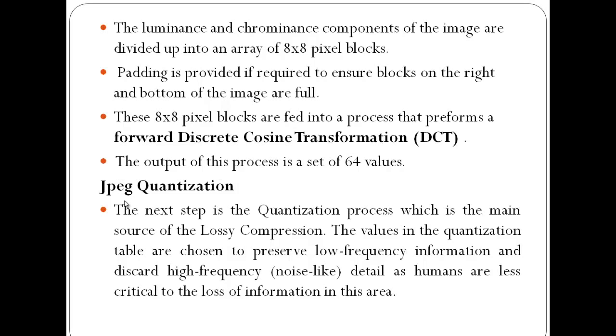After this, JPEG quantization is done. This is the main source of lossy compression. The values of the quantization table are chosen to preserve low frequency information and discard high frequency details, because humans are more critical to loss of information in this area.